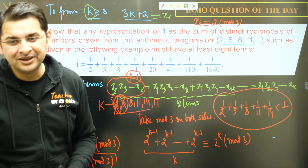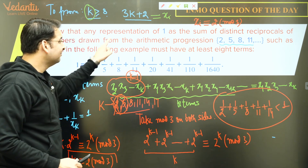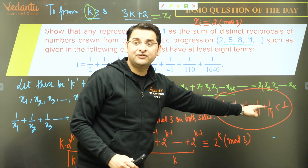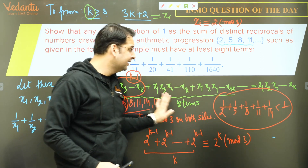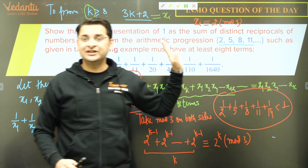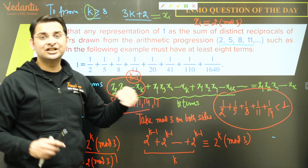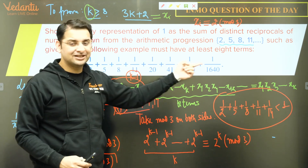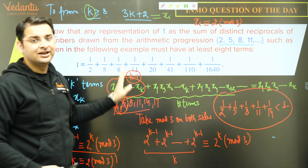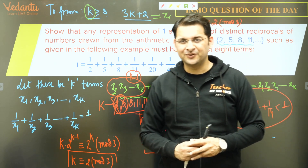I hope this is clear to each and every one of you. The number of terms must be at least 8. It cannot be 2 or 5, because we have shown the best 5 terms give a sum less than 1. The next possibility is 8. So it has to be at least 8 terms — one example is already given. This is what we had to prove. Take care.